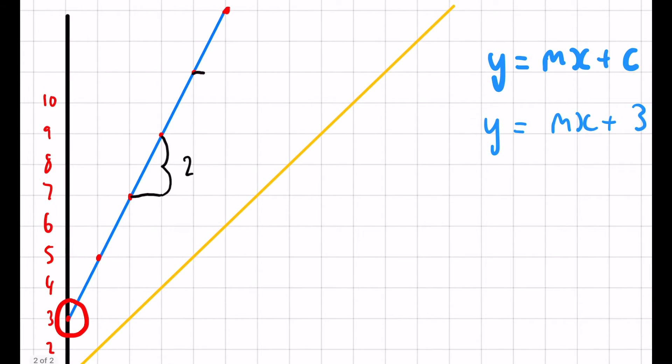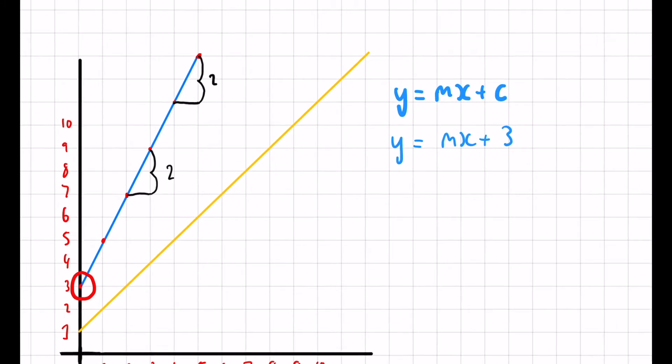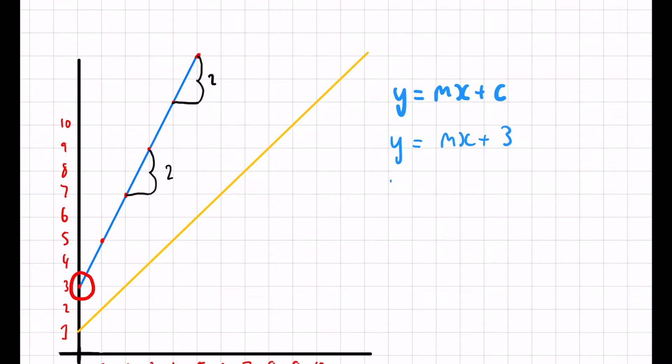And you can see, if you were to do that anywhere else, one, two—it's going to be two everywhere because it's a straight line. So overall, our equation would be y equals 2x plus 3.